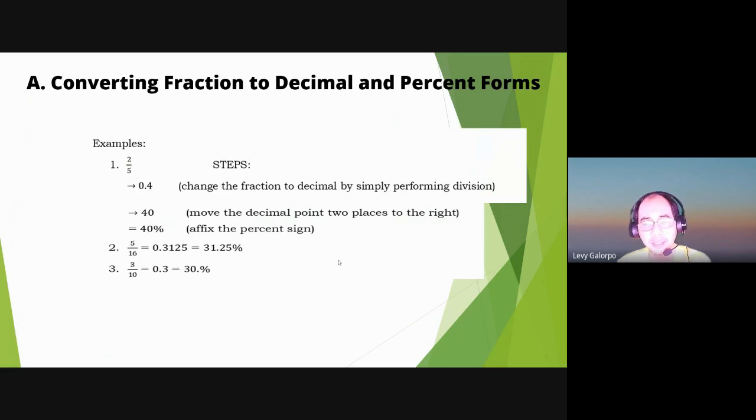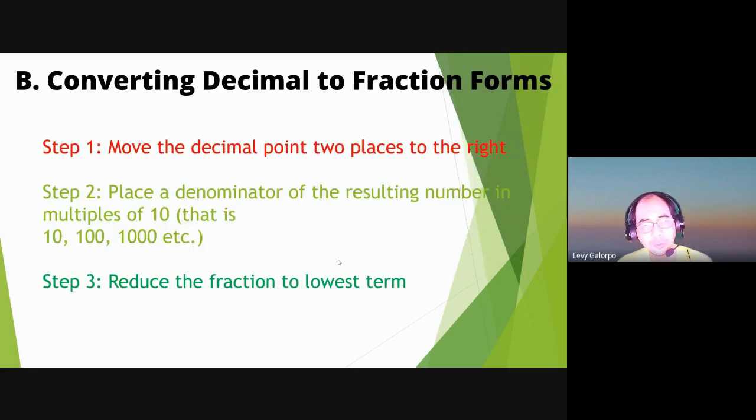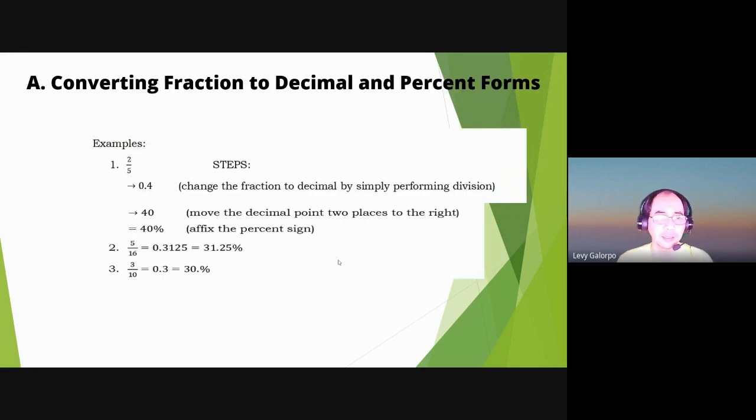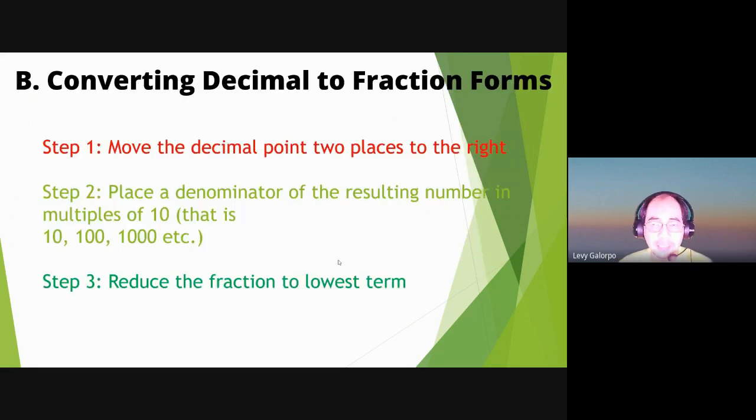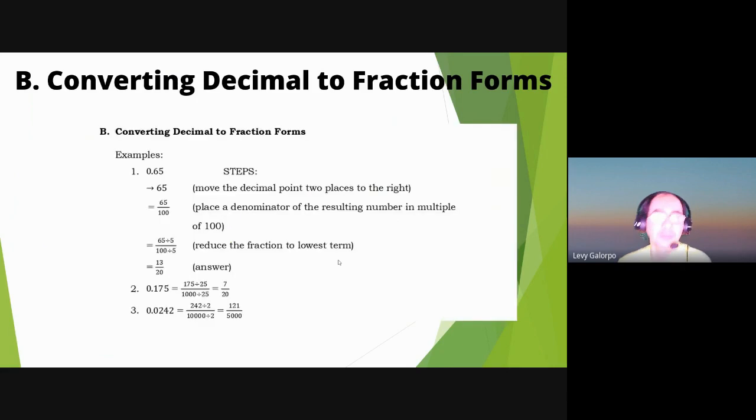Let's proceed to converting decimal to fraction forms. Step one: move the decimal point two places to the right. So nadaanan na rin natin yung nauna diba, kasi dito nagsimula na sya sa decimal, parang nabawasan na lang tayo ng step. Step two: place the denominator of the resulting number in multiples of ten - that is 10, 100, 1000. Then step three: reduce the fraction to lowest term.